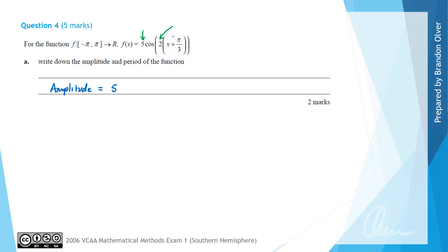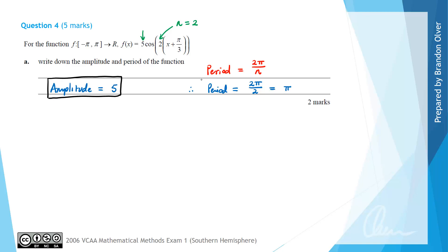The period can be found by looking at the value multiplying x, which we might call n, so n equals 2. We use the formula that the period is equal to 2 pi divided by n. Therefore, the period of this graph is going to equal 2 pi divided by 2, which simply equals pi. So for part a, the amplitude equals 5 and the period equals pi.